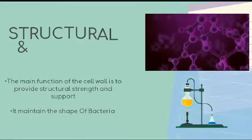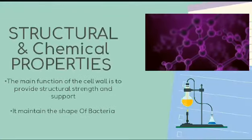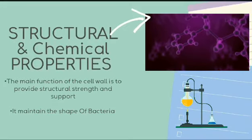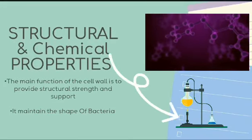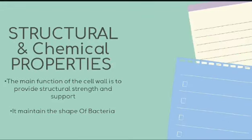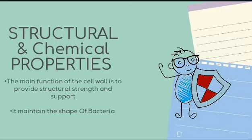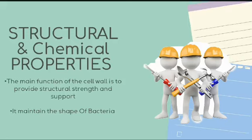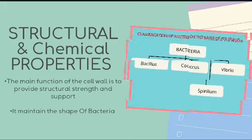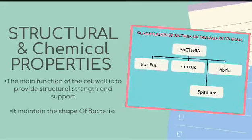Here we are talking about the structural and chemical properties of the cell wall of bacteria. The main function of the cell wall is to provide support and protection, and it maintains the shape of bacteria — as we have already discussed, bacteria is classified on the basis of its shape.